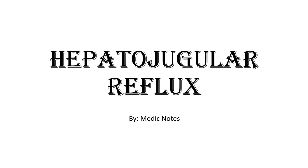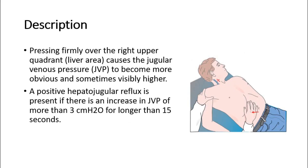Welcome back to another video of Medic Notes. This video is on hepatojugular reflux. During abdominal examination, pressing firmly over the right upper quadrant, which is the liver area, causes the jugular venous pressure (JVP) to become more obvious and sometimes visibly higher. A positive hepatojugular reflux is present if there is an increase in JVP of more than 3 cmH₂O for longer than 15 seconds.